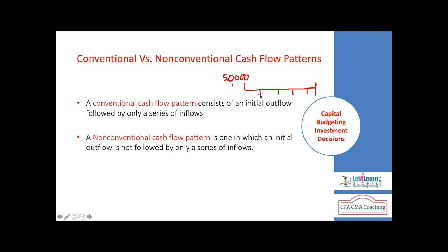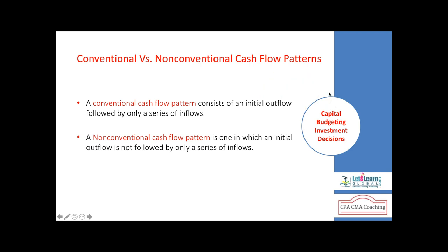When accepting or rejecting a project, we don't just look at the investment — we also look at the result of the project. Acceptance and rejection depends on ranking based on the amount invested and the amount received. The next terms to understand in capital budgeting are conventional and non-conventional cash flow patterns.